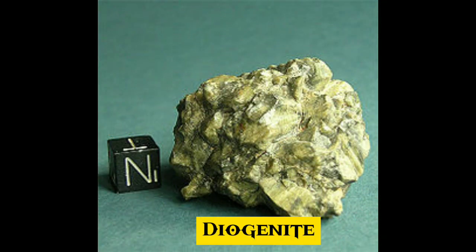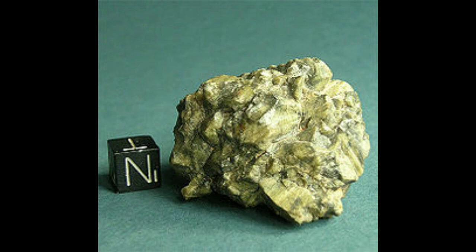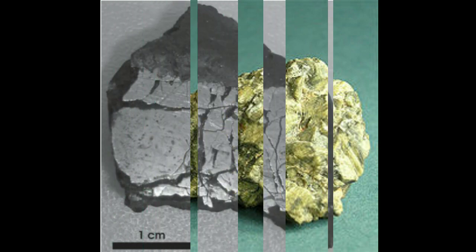11. Diogenites are a group of the HED meteorite clan, a type of achondritic stony meteorites. Composition: primarily magnesium-rich orthopyroxene, with a little plagioclase and olivine. Structural classification: igneous rocks of plutonic origin. Total known specimens: 4,013.